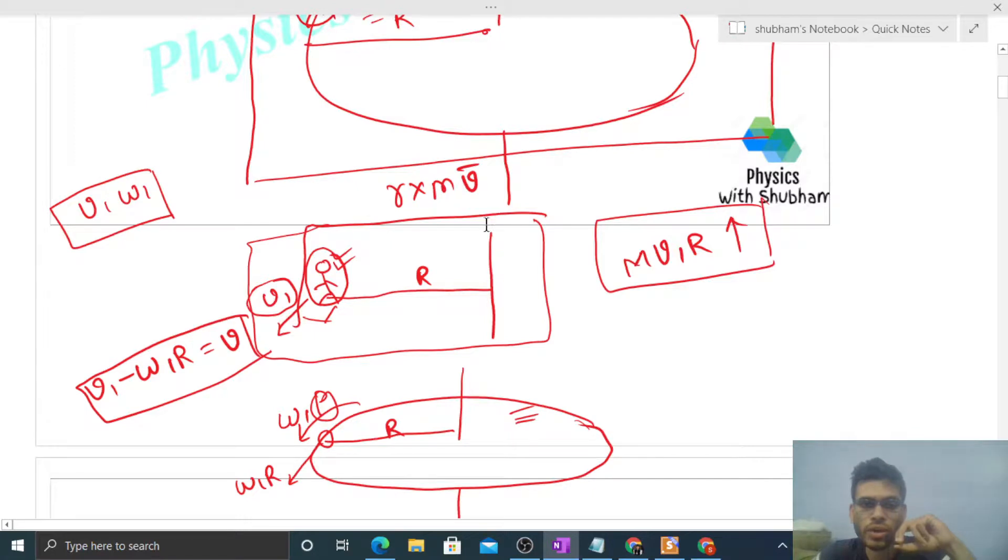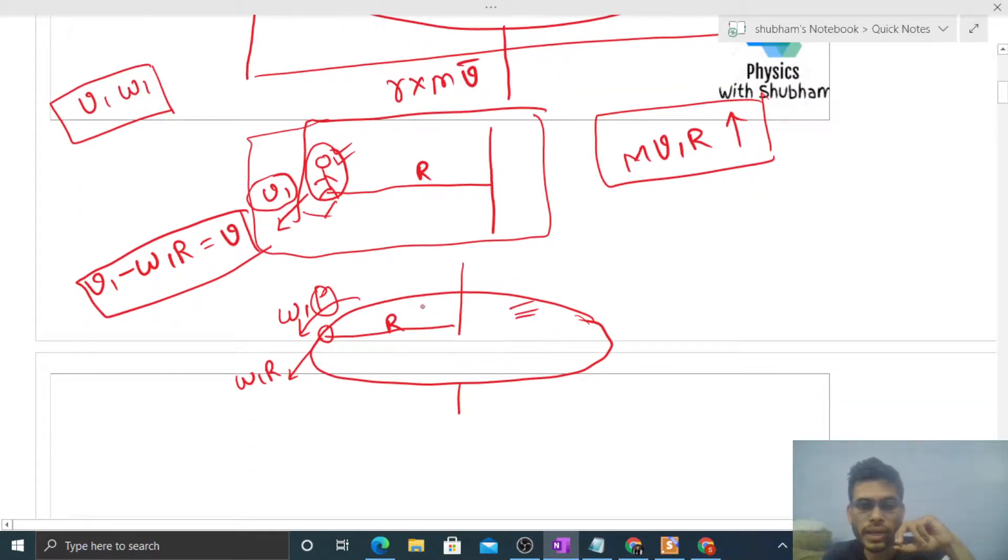You can check: R cross v will be in the upward direction. The angle between R and v is 90 degrees, so sin 90 applies. The platform's angular momentum will be I into omega 1, also in the upward direction.